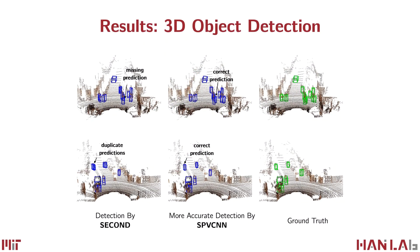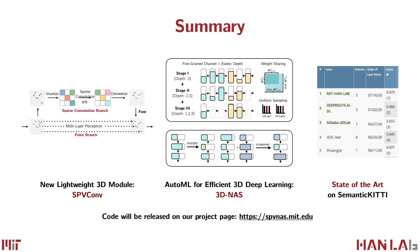We finally visualize the results of 3D object detection, where our method achieves more accurate predictions in crowded scenes with many small objects. In summary, in this paper, we propose a new lightweight 3D module, SPV-Conv, which can capture fine details in large outdoor scenes. We then propose the first AutoML method for efficient 3D deep learning, 3D NAS, to automatically design efficient neural networks built with SPV-Conv. We achieve state-of-the-art performance on the challenging Semantic KITTI leaderboard. We believe this work can have an important impact in building efficient and safe autonomous driving systems. Please visit our project page at spvnas.mit.edu for more details. Thanks for your attention.